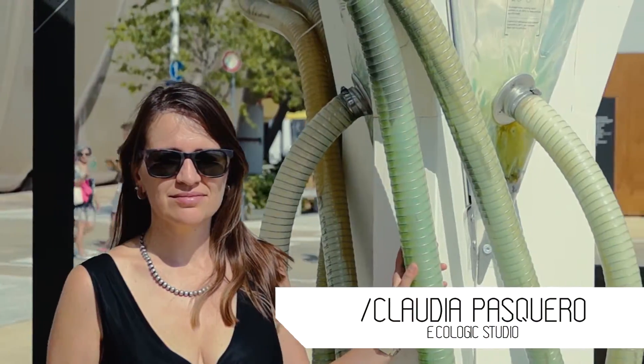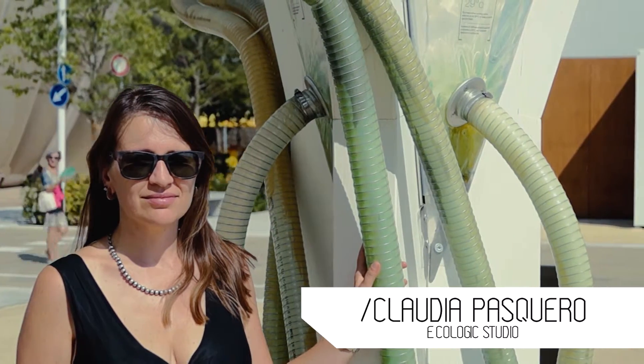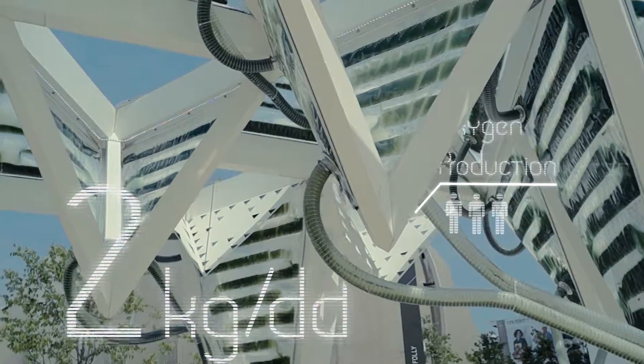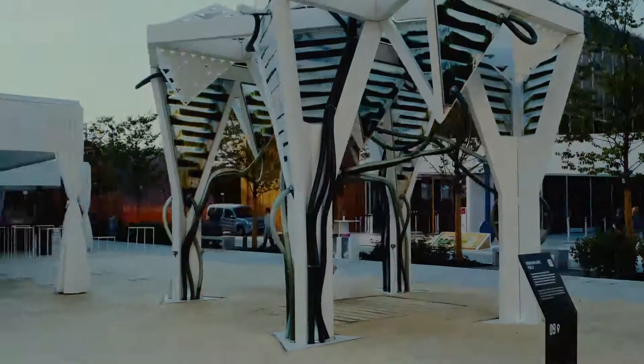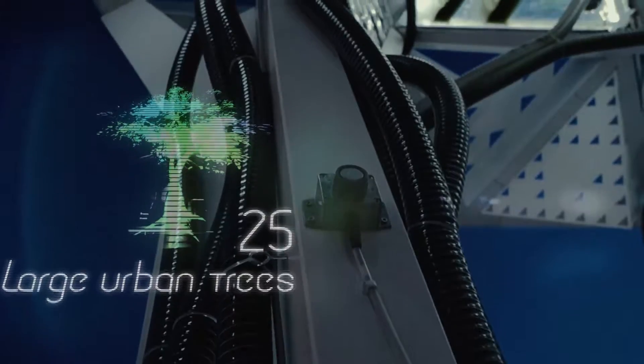The Urban Algae Folly produces an average of 2 kg of oxygen per day, which is the equivalent oxygen that 3 adults need to survive. It takes 25 large urban trees to do that.